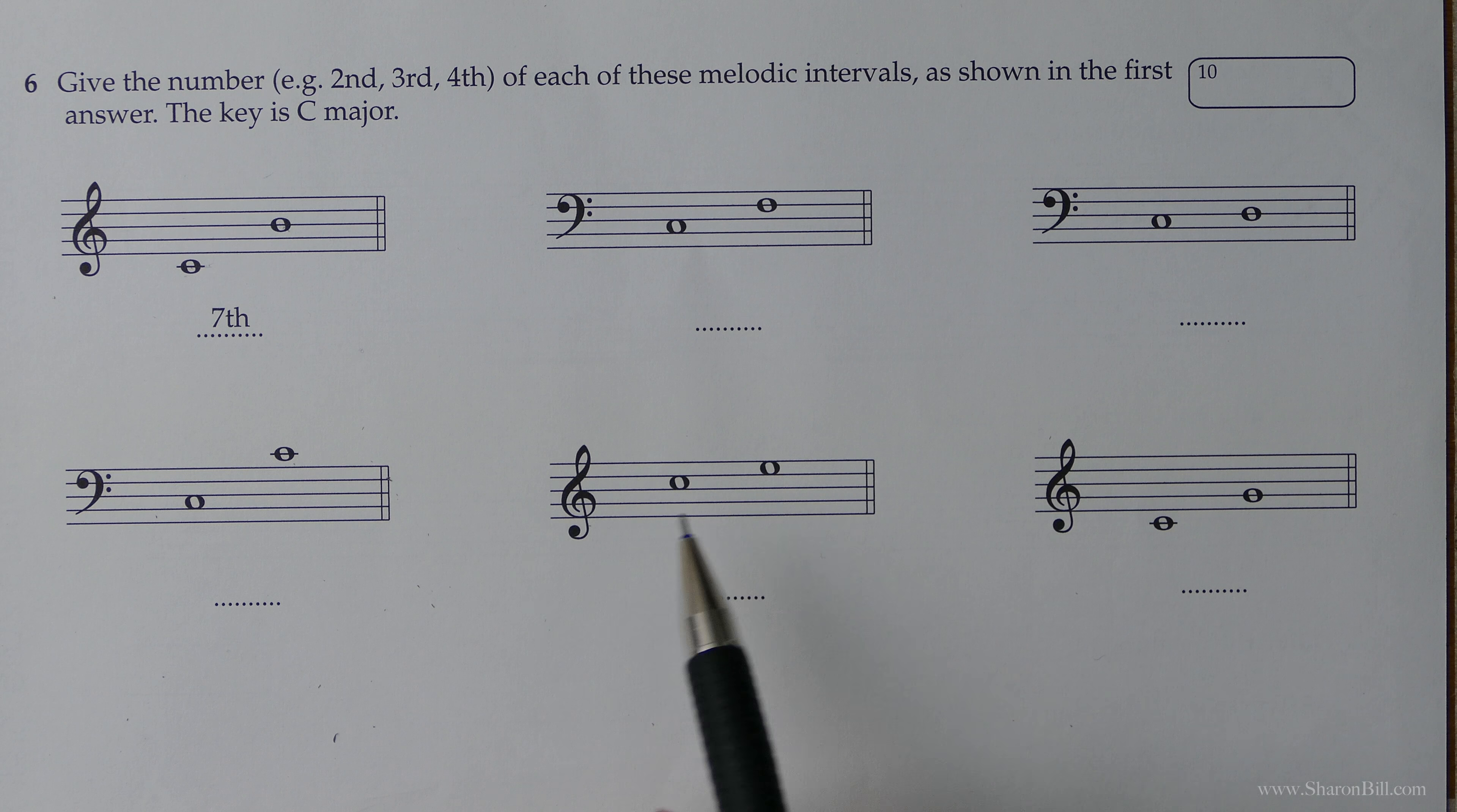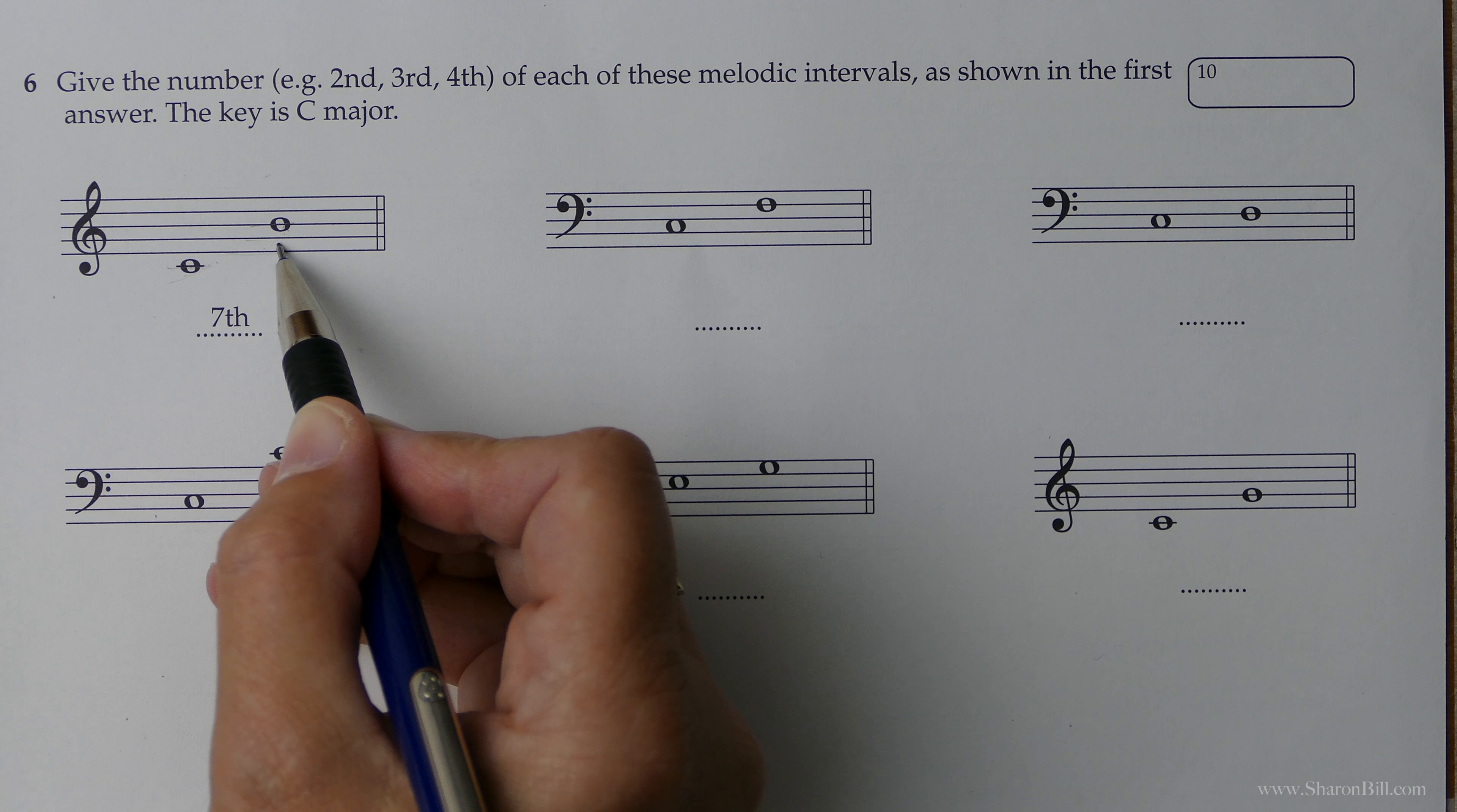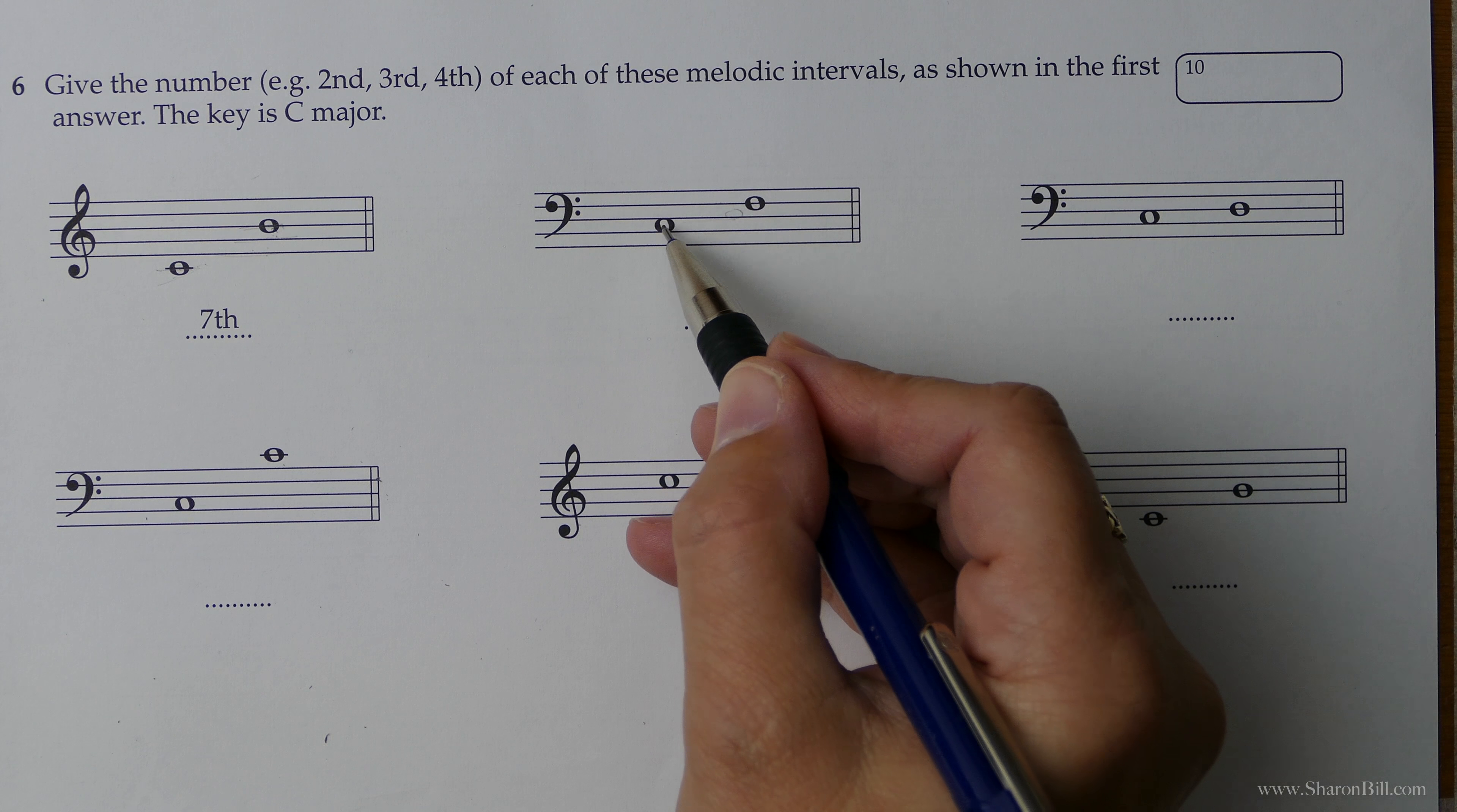We're counting from the lowest note, which is C. And the fact that we're changing clef really doesn't change the system at all. We're just counting up the steps. So for example here, we're counting from the given note one. Line, space, line, space, line, space, line. One, two, three, four, five, six, seven. So that's a seventh.